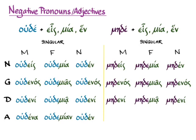And then the accusative: oudena, oudemian, ouden — and medena, medemian, meden.